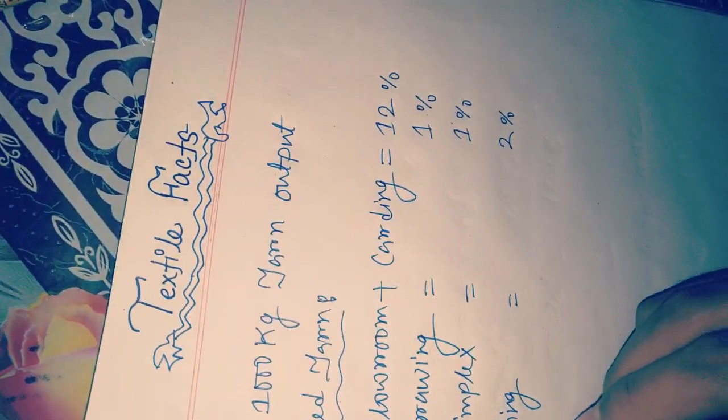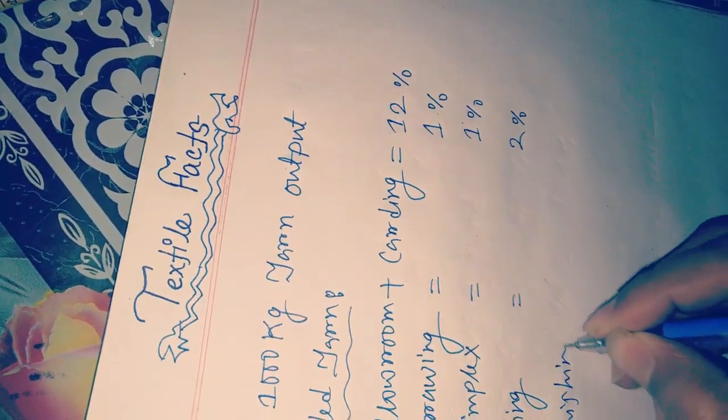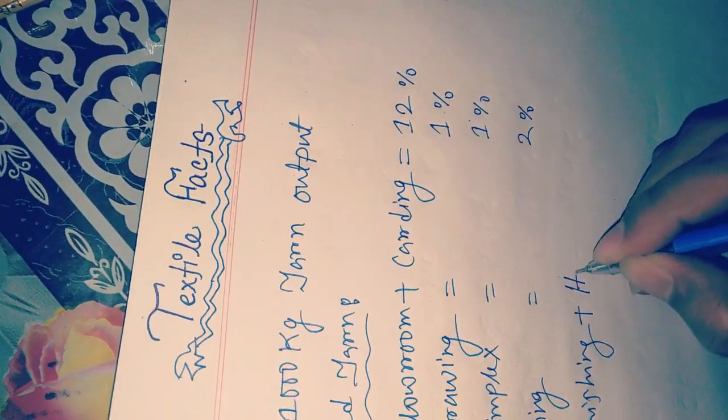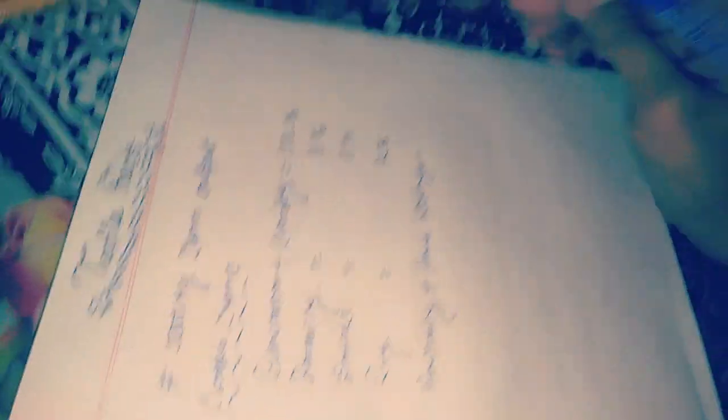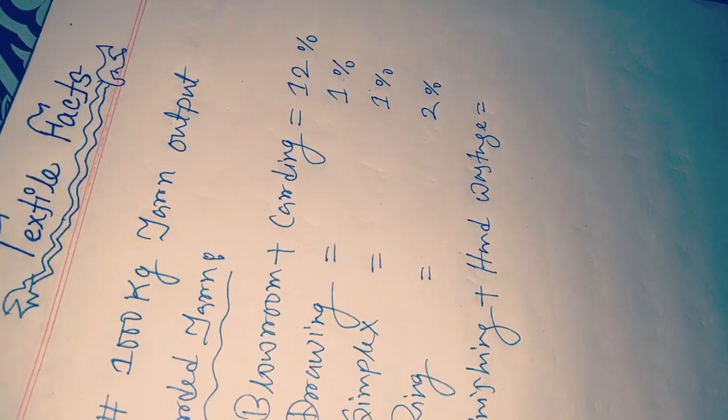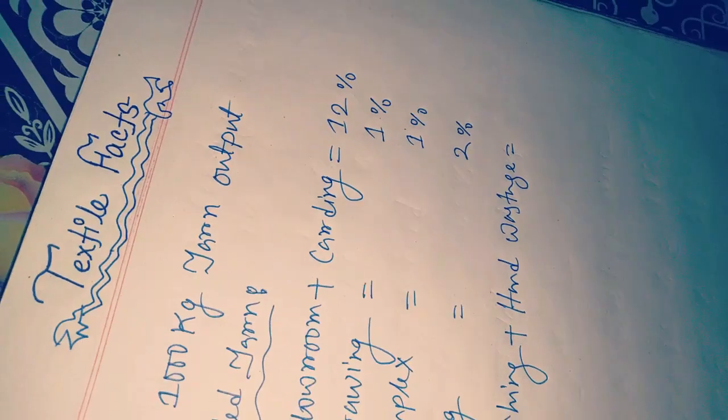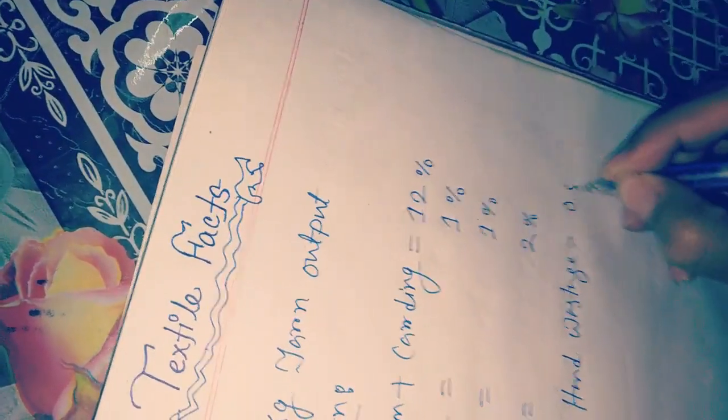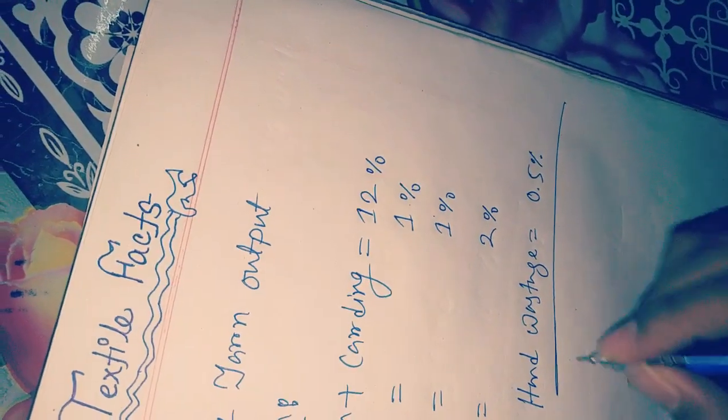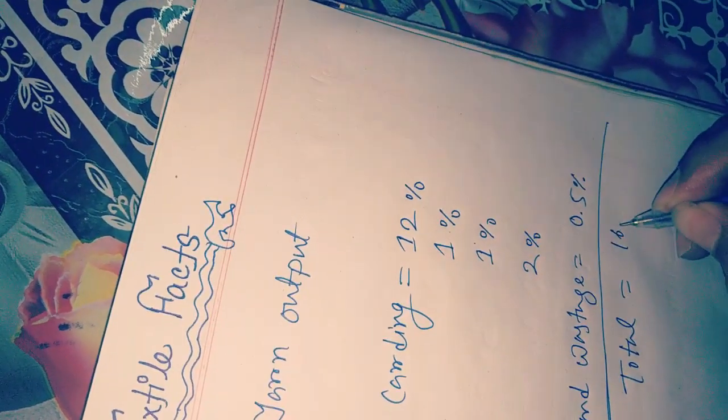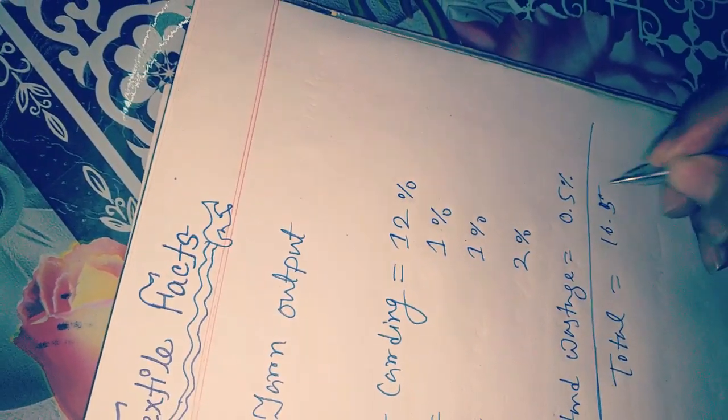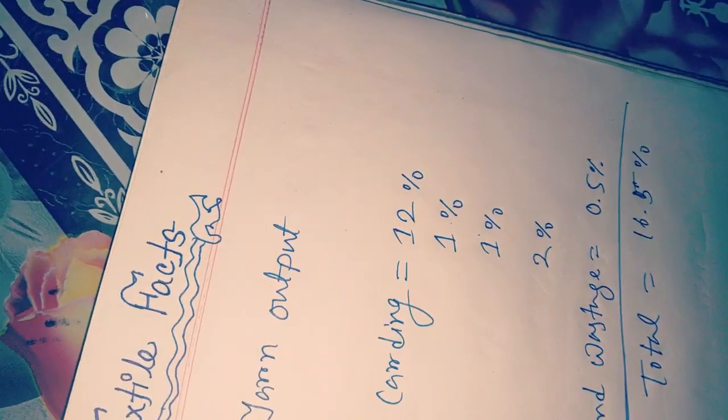Finishing plus hard wastage - hard wastage is the extra wastage that is contained with the cone at the last portion of the yarn in the cone - will be 0.5%. The total will be 12, 13, 14, 15, 16.5%. This is a common calculation for carded yarn.